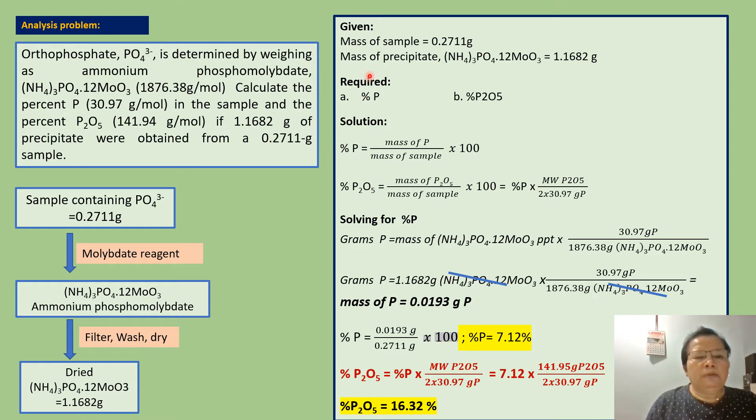To solve the problem, first we have to identify all given and what is asked. Given: mass of sample equals 0.2711 gram, mass of precipitate 1.1682 grams. We are asked to solve for percent phosphorus and percent diphosphorus pentoxide.